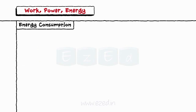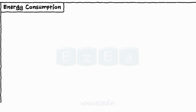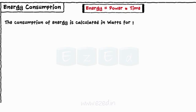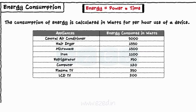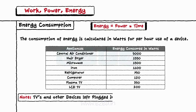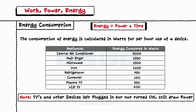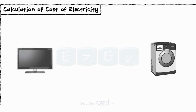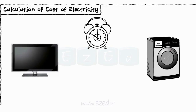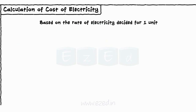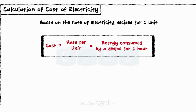Let's learn the concept of energy consumption. We know that energy equals power into time. The consumption of energy is calculated in watts per hour use of a device. The following table illustrates the energy consumed by some commonly used household appliances. Please note that all examples given illustrate average energy consumed and not exact figures. To calculate the cost of energy consumed, each device's consumption is analyzed for a duration of one hour.